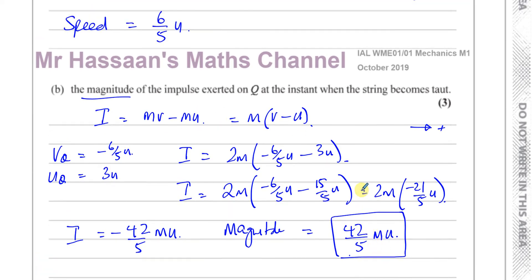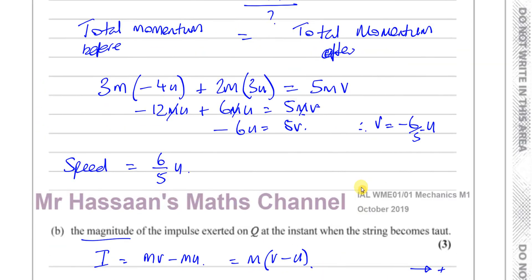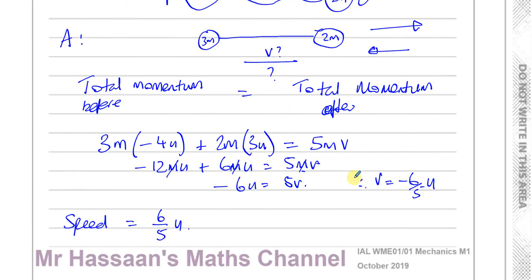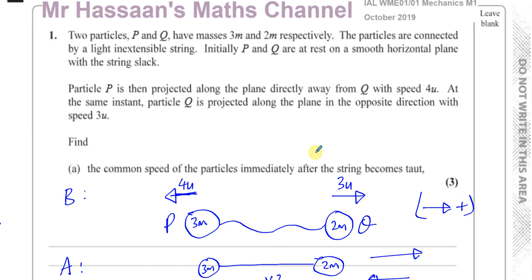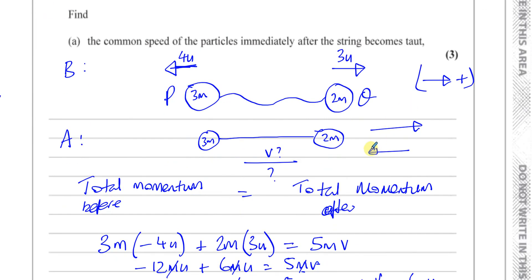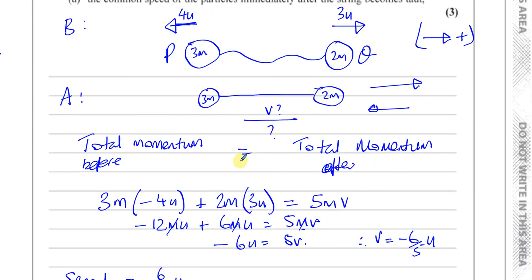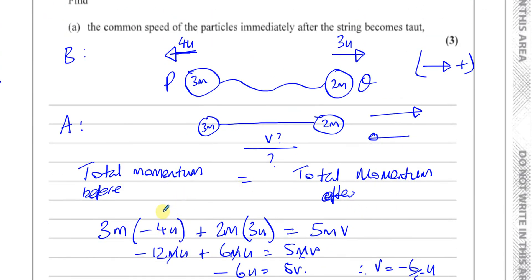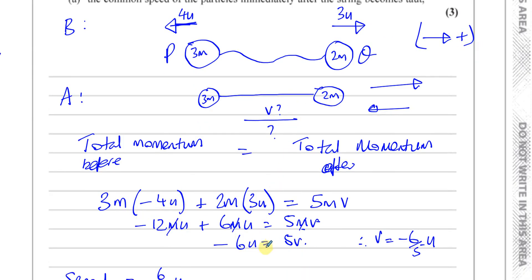So there's the answer to part b. I hope that was clear. Take care of directions — that's where a lot of people make mistakes. They would put 3m times 4u instead of minus 4u, because they don't account for the fact that these are moving in opposite directions. So decide what direction you want to take as positive, and stick by that and be consistent in all your equations.